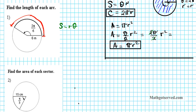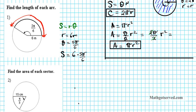How long is this distance? This formula tells us that we need two things: the radius and the angle. In this case, the radius r is six meters and the angle theta is five pi over six. Plugging these into the formula, S equals r times theta, which is six times five pi over six. The sixes divide out and the final answer is five pi meters.